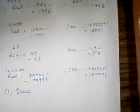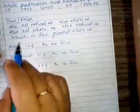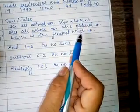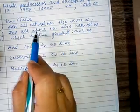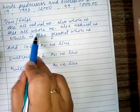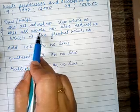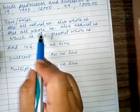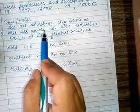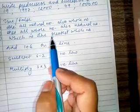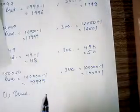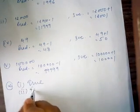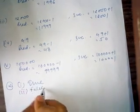The second statement is: are all whole numbers natural numbers? Whole numbers start from 0 and natural numbers start from 1, so it is false. All whole numbers are not natural numbers. The second one is false.